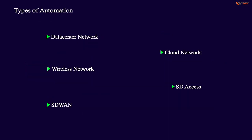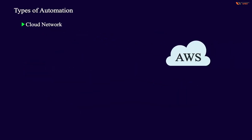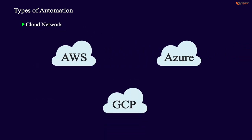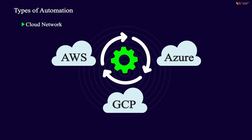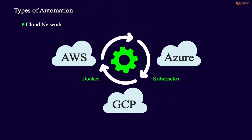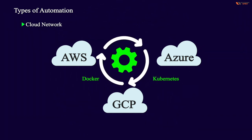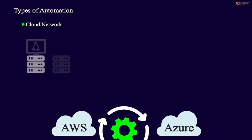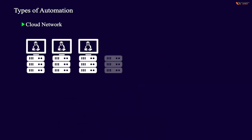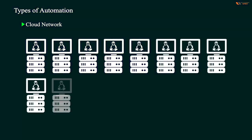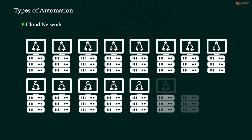The same way, cloud is going well in the market right now. If you talk about AWS, Azure, or Google Cloud Platform, there are some scripts and concepts like Docker and Kubernetes — many things in cloud networking are getting automated. For example, if you want to run 100 Linux servers and install some application on all of them, this type of automation you will see in cloud networks.